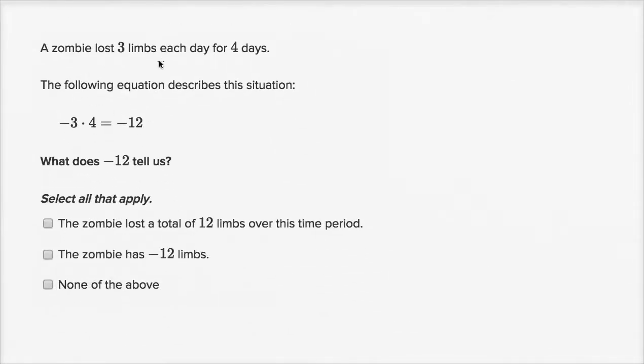A zombie lost three limbs each day for four days. So it's going to lose 12 limbs, three times four. It's not a human zombie, it's an alien zombie that has at least 12 limbs to lose. The following equation describes this situation.